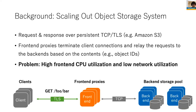The main target of this research is object storage systems. The simplified architecture consists of front-end proxies and back-end storage. Clients request objects through HTTP keep-alive over persistent TCP or TLS connections. Front-end proxies terminate client connections and forward requests to the back-end based on content like object IDs or other application-level information. They also relay responses and encrypt them for TLS. As a result, front-end proxies experience high CPU utilization due to forwarding large amounts of data and encryption, while the entire cluster ends up with low network utilization because all traffic goes through the front-end.